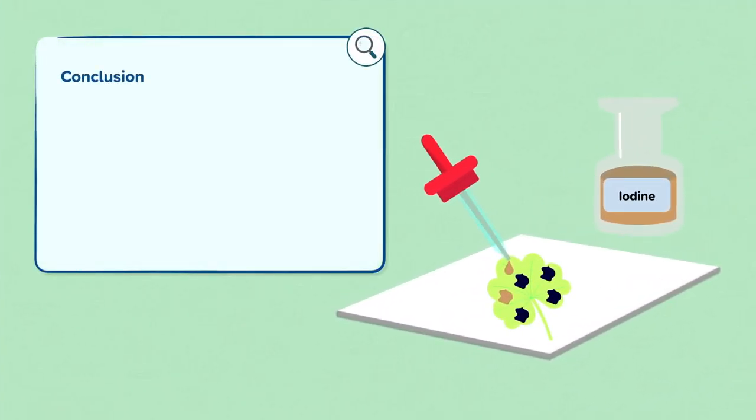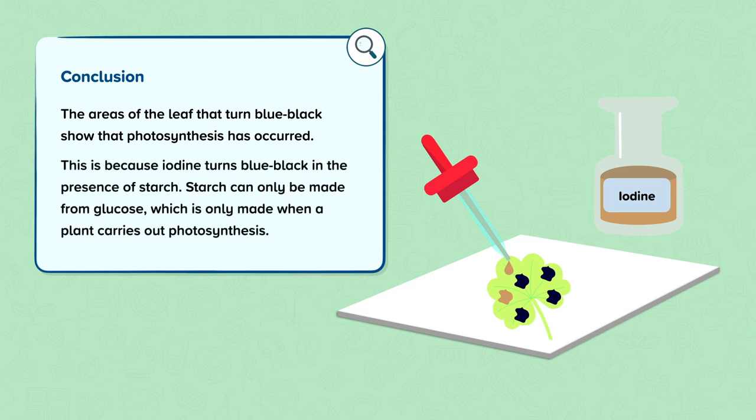Conclusion. The areas of the leaf that turn blue-black show that photosynthesis has occurred. This is because iodine turns blue-black in the presence of starch. Starch can only be made from glucose, which is only made when a plant carries out photosynthesis.